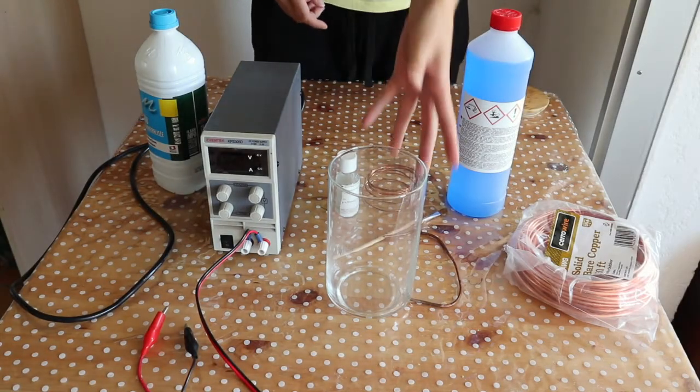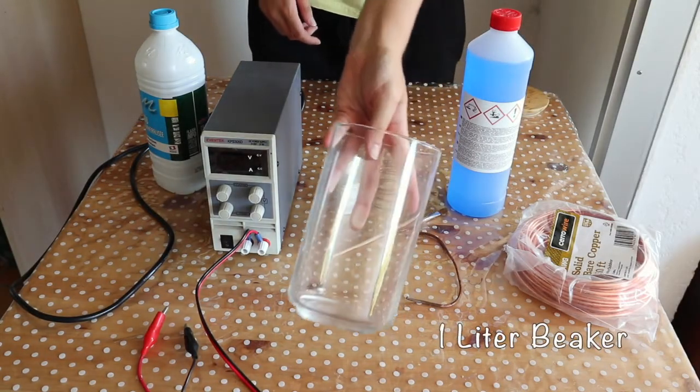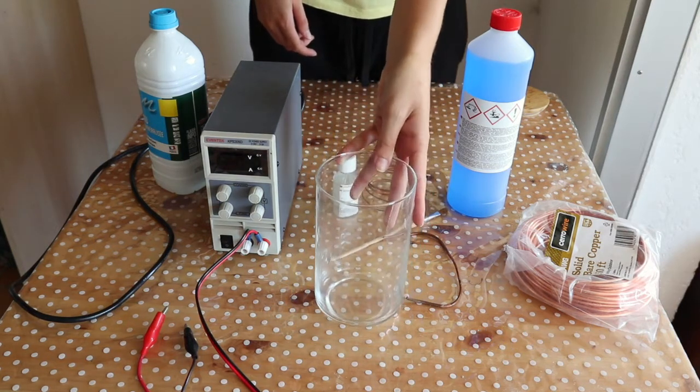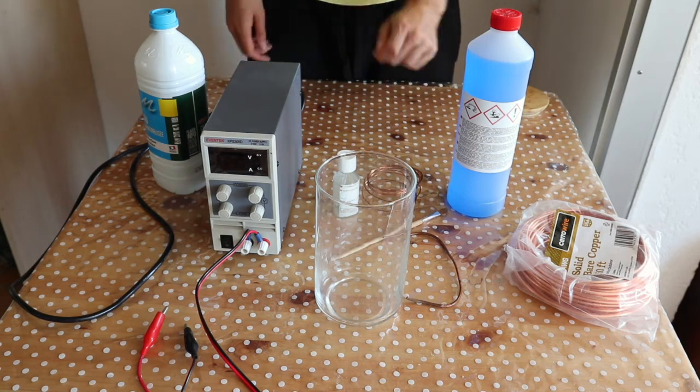Today I'm going to give you a basic supplies list for electroforming. The first thing you need is a beaker. I use a 1 liter beaker which is perfect for beginners.